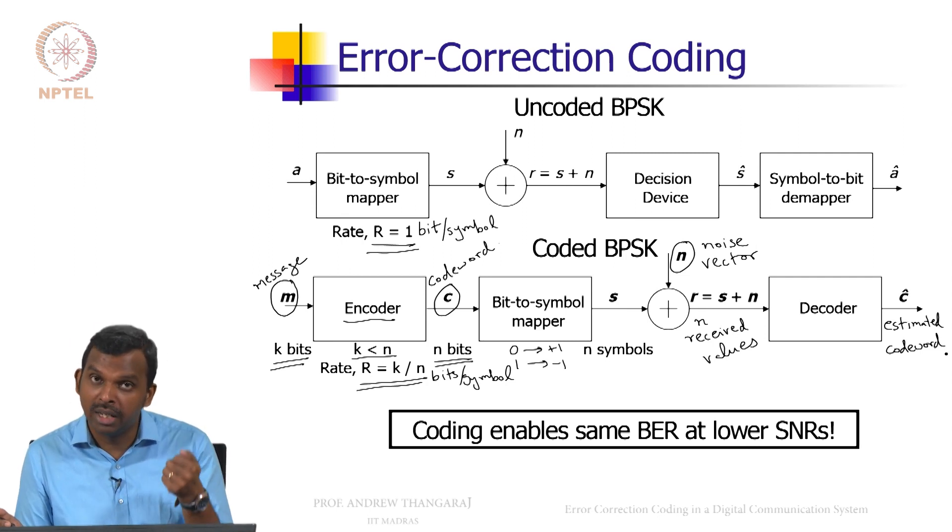So your signal power has to be reduced as much as possible but you also want to achieve the same bit error rate. So if you do coding, you get this benefit. Without going for a higher signal to noise ratio, you can get the same bit error rate. Lower bit error rates at the same SNR or the same BER can be achieved at a lower SNR.